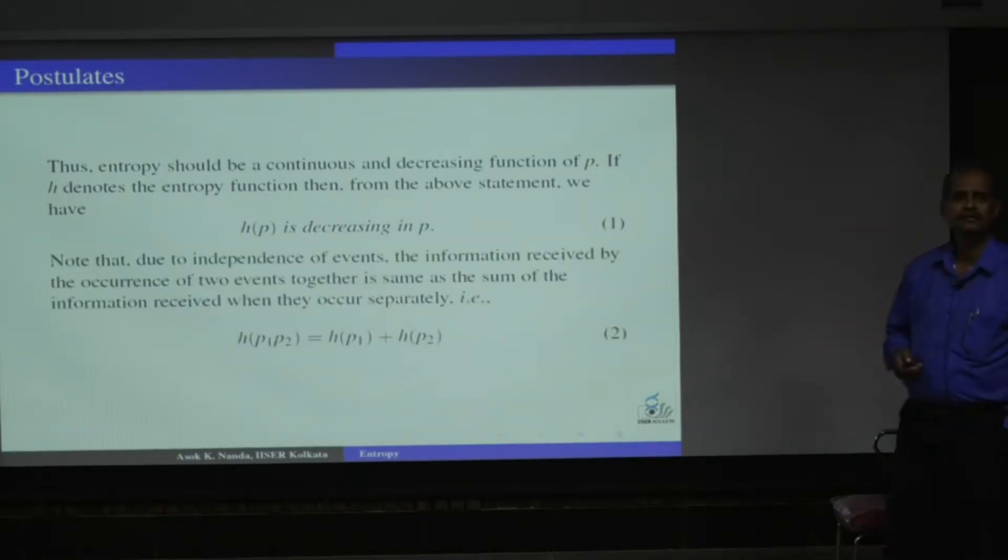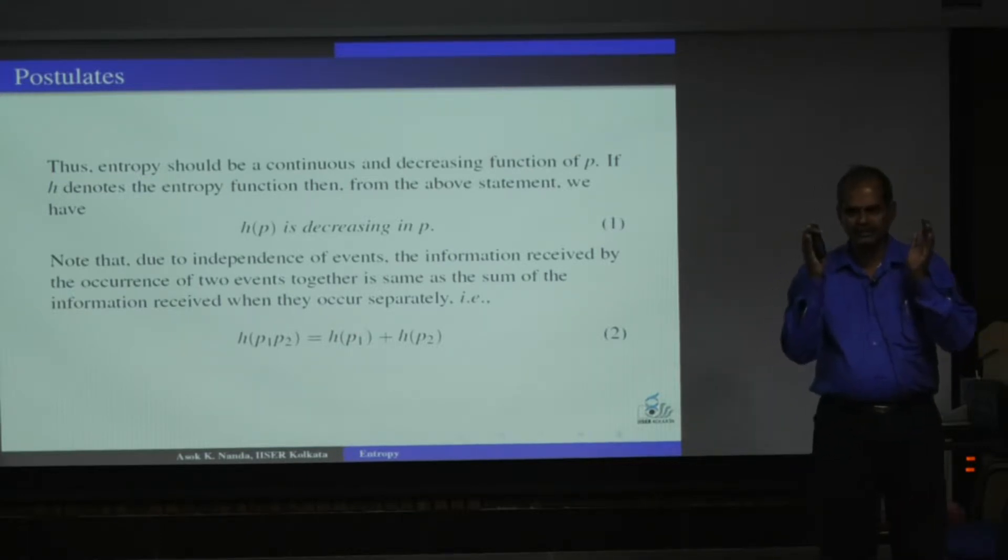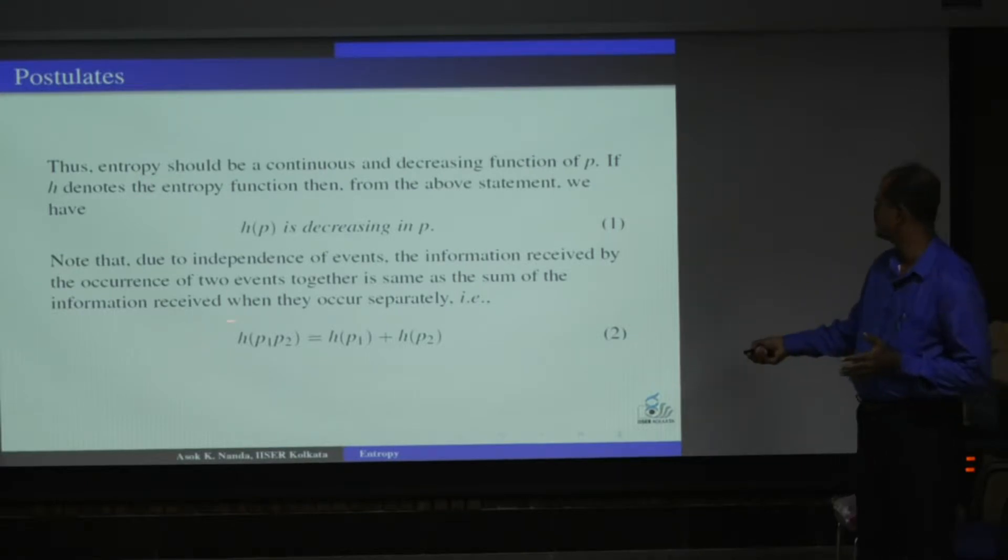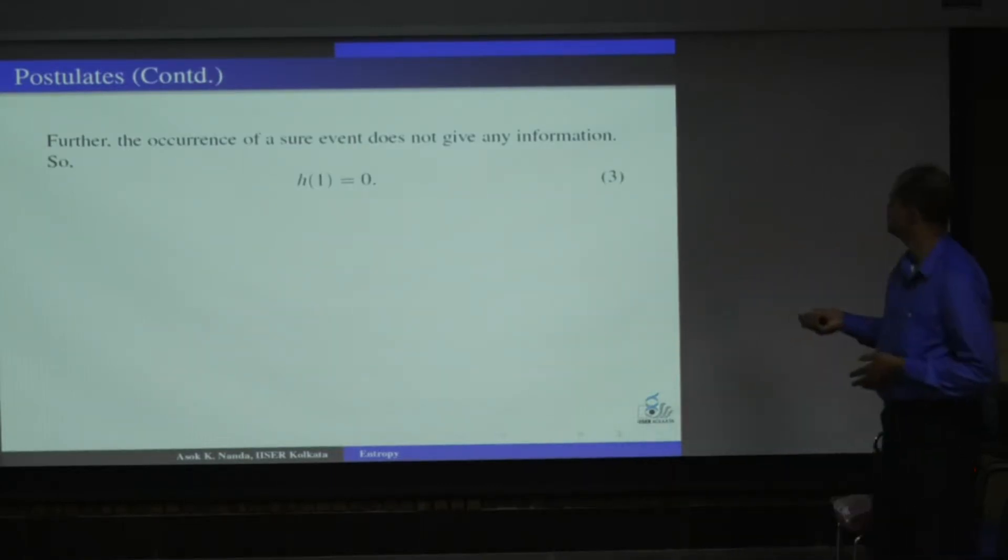If we have two events, E1 and E2, with probability P1 and P2, and they are independent events, then occurrence of two together has entropy H(P1, P2), which will be same as H(P1) plus H(P2). Because two events occurring together has entropy H(P1, P2), and they are occurring separately with entropies H(P1) and H(P2). H(1) should be 0, because if probability is 1, I know that this is a certain event, then there is no uncertainty. So there is no entropy. The entropy will be 0.